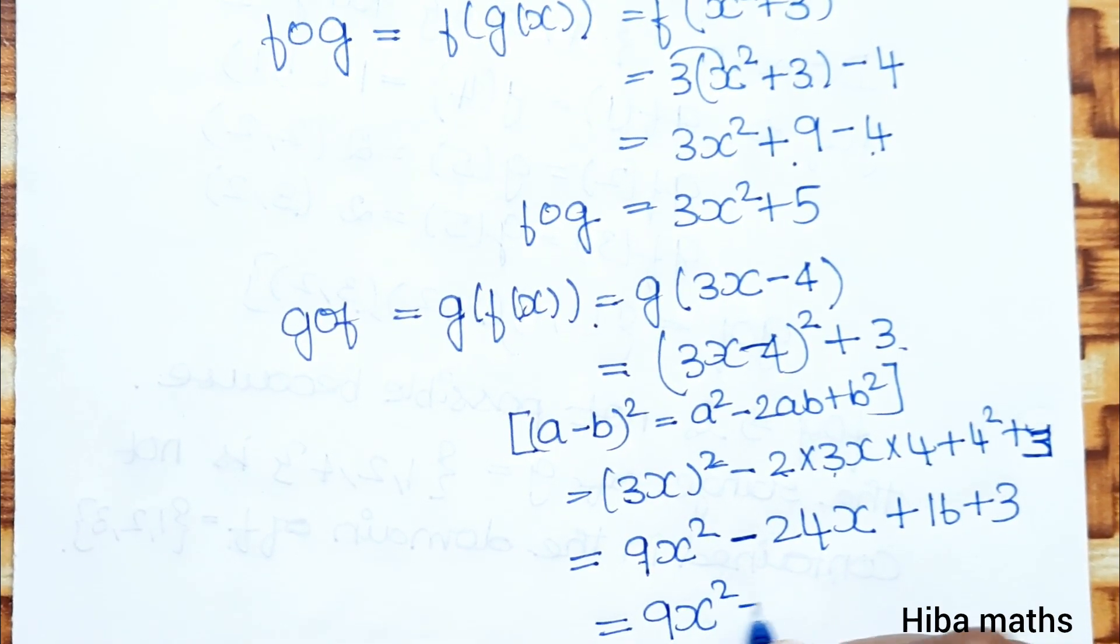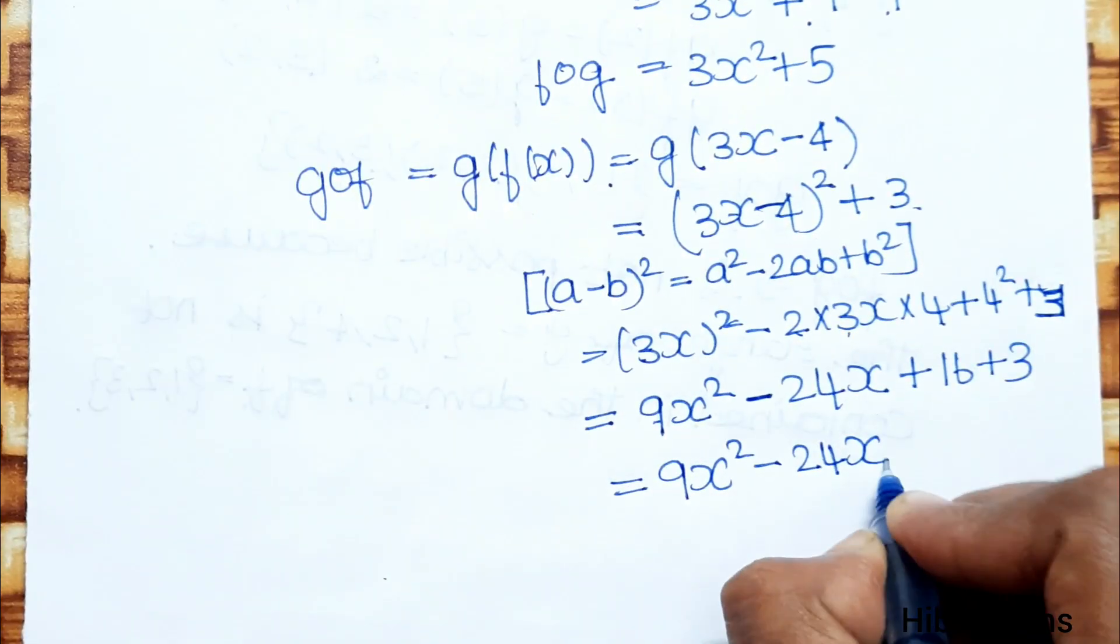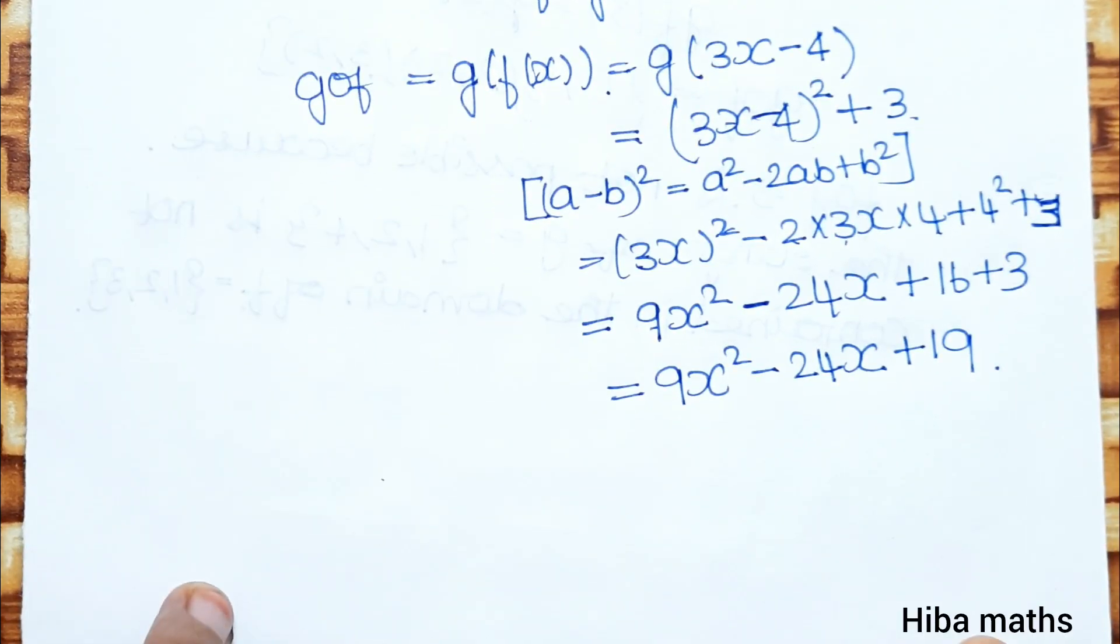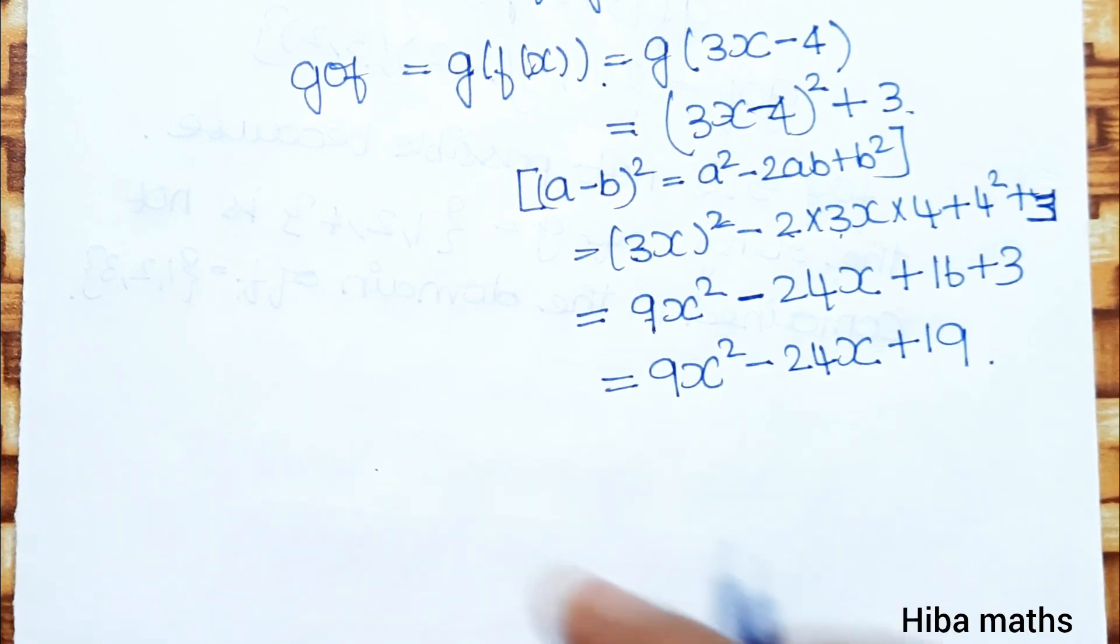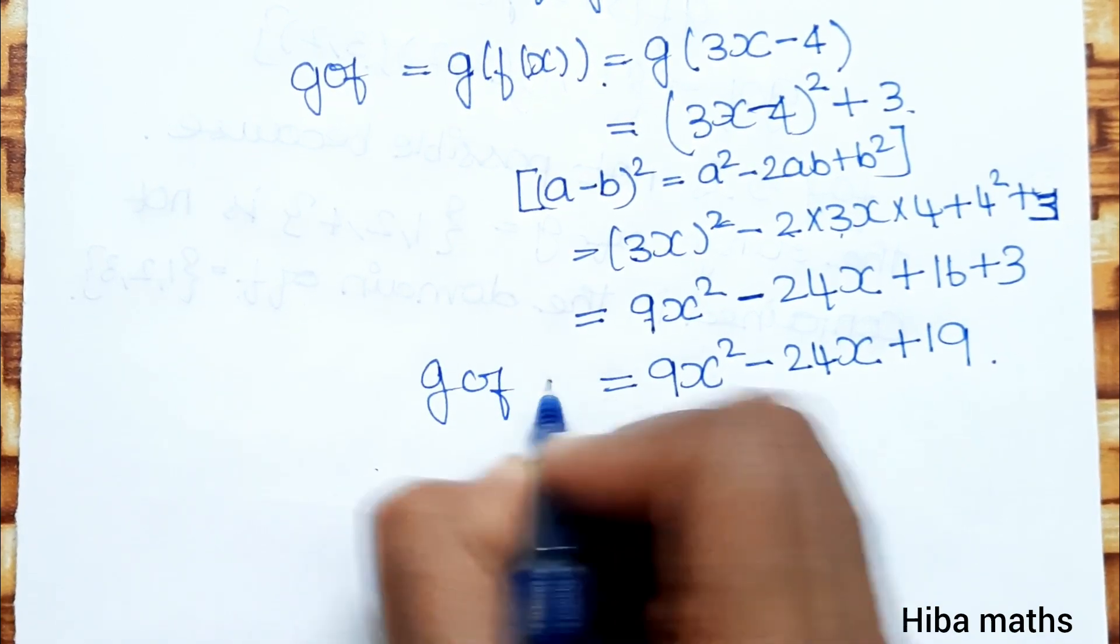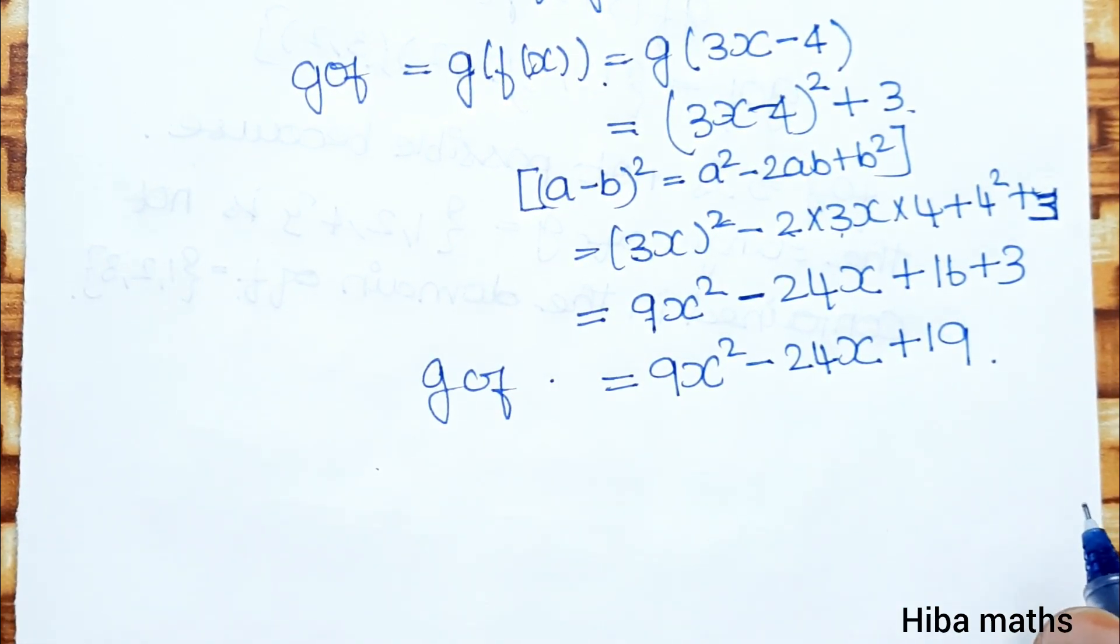Therefore, g of f equals 9x square minus 24x plus 19. We have solved using the same method. Thank you so much for watching.